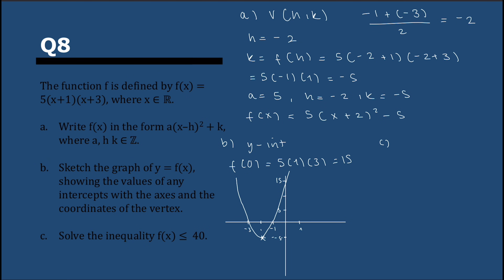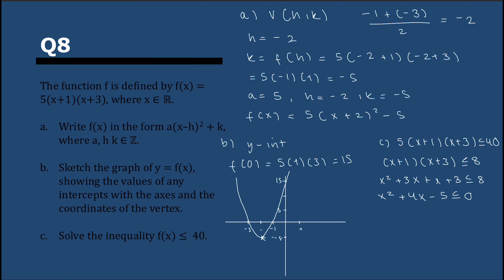We have to solve the inequality f(x) < 40. I'll use the original form. Dividing both sides by 5 and expanding (x + 1)(x + 3) gives x² + 4x + 3 < 8. Taking 8 to the other side: x² + 4x − 5 < 0. Solving as a quadratic, the two solutions are x = −5 and x = 1. Since it's an inequality, f(x) < 0 between −5 and 1 — checking x = 0 confirms it's negative — so the solution is −5 < x < 1.